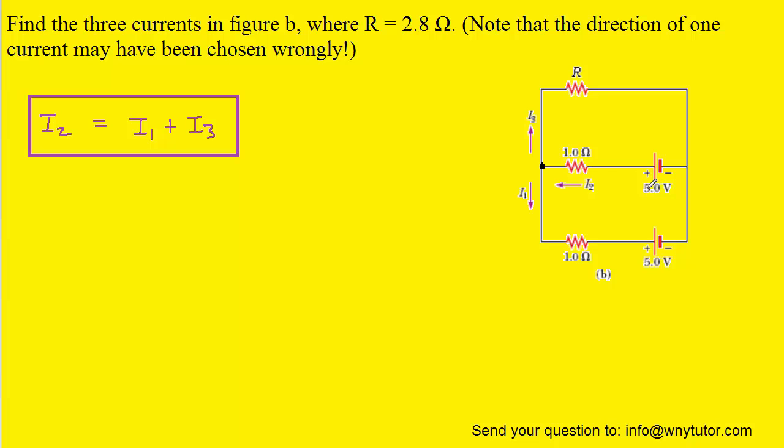We will next have to use Kirchhoff's loop rule. To use the loop rule, what you need to do is pick an arbitrary starting point within the circuit. Then you're going to follow a continuous path around a portion of the circuit until you return back to where you started. For example, this could be one loop right here. When we move around the loop, we want to keep track of the potential changes, which will occur when we pass through a battery as well as a resistor.